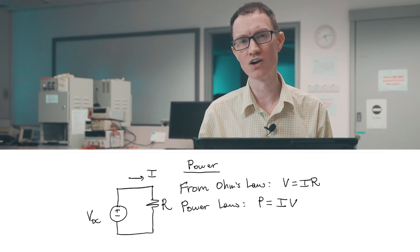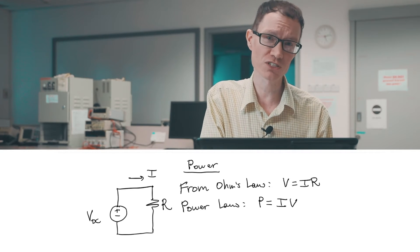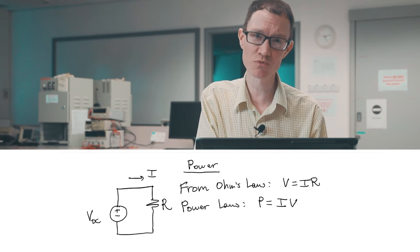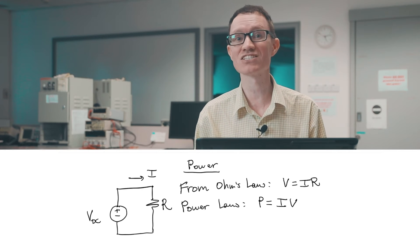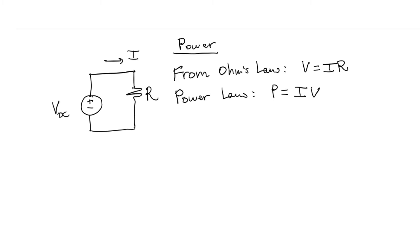Because we have conservation of power. Every watt that the DC voltage source supplies has to be consumed by the resistor. Otherwise, it violates conservation of energy. And power is just energy per unit time.